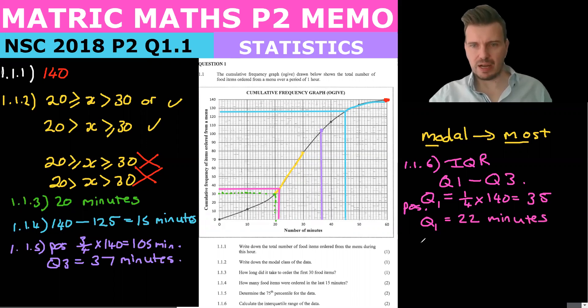And so our IQR, interquartile range, is going to be the 37 minutes minus the 22 minutes, which is going to give us 15 minutes. Okay, so that's question one done.